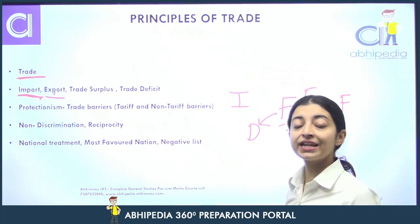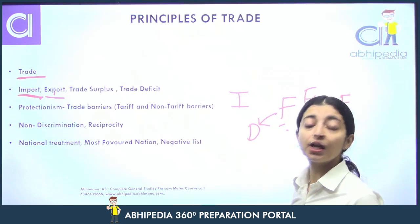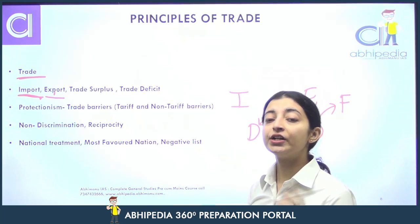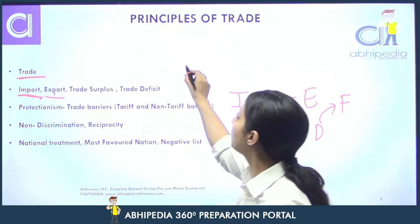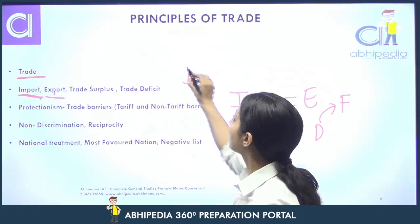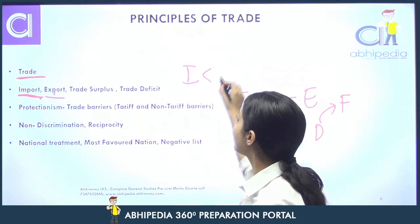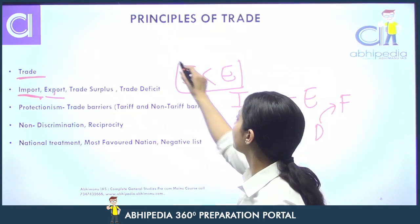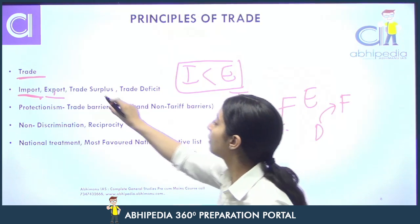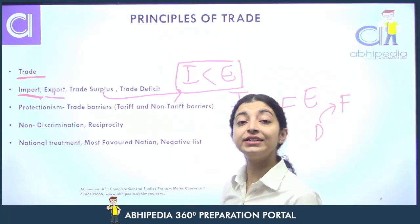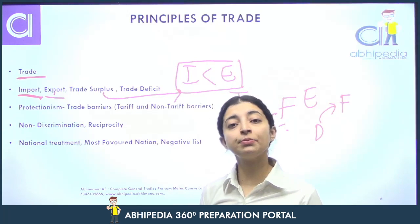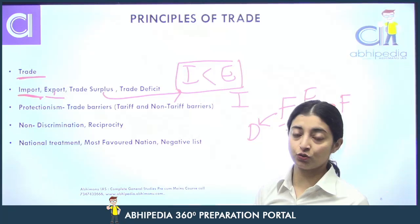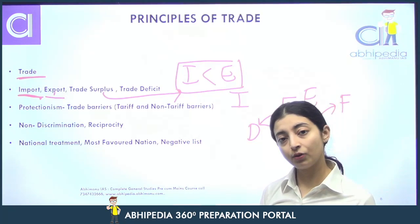Ab trade surplus aur trade deficit ki baat karte hain. Trade surplus kya hota hai? Trade surplus hota hai jab imports are less than exports. Aur trade deficit tab hota hai jab imports badh jaate hain aur exports kam ho jaate hain — to trade deficit ho jaata hai.